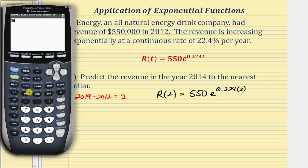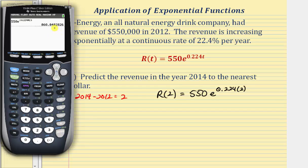We'll enter 550. For e, press second then natural log, which brings up e raised to the power of. The exponent in parentheses is 0.224 times 2, then close parenthesis and enter. Because this is in thousands of dollars, we'll round to three decimal places — to the nearest dollar — giving us 860.848.